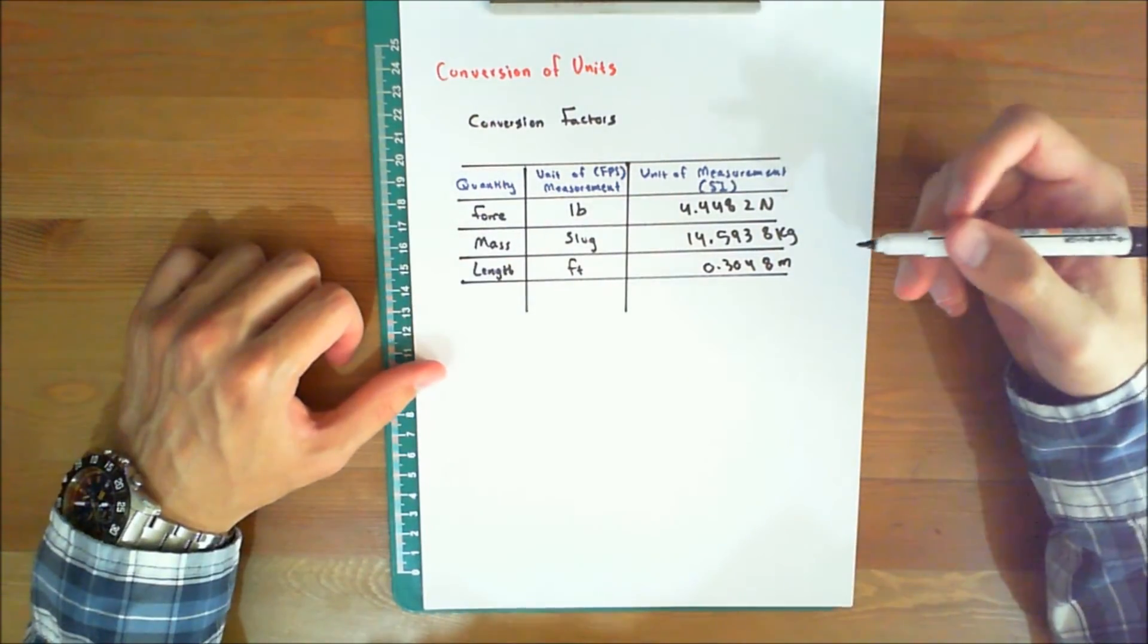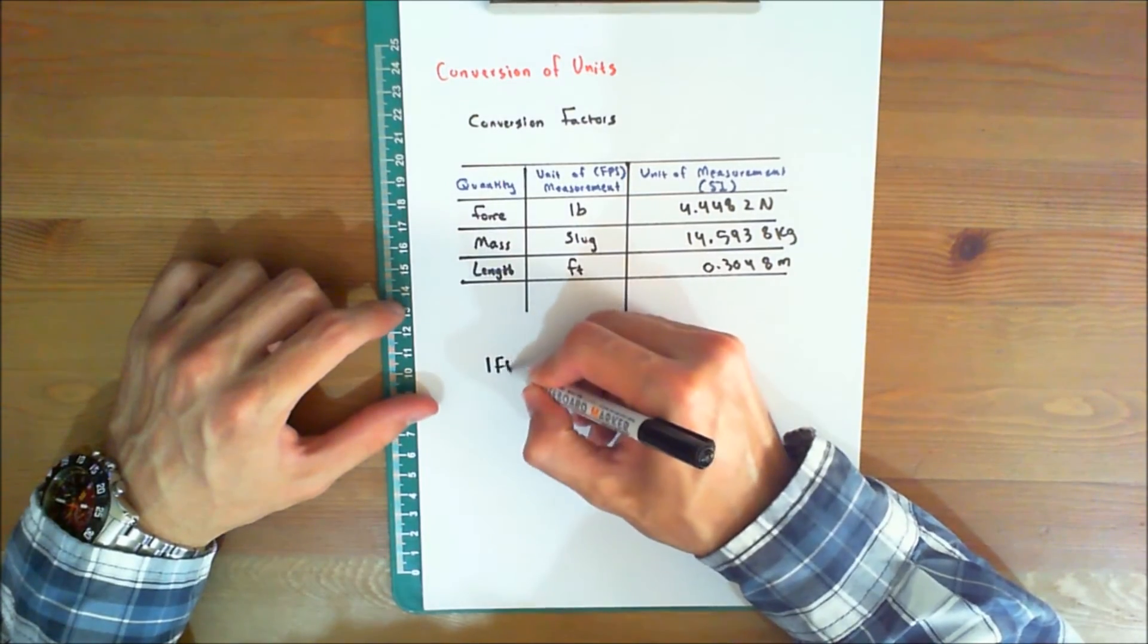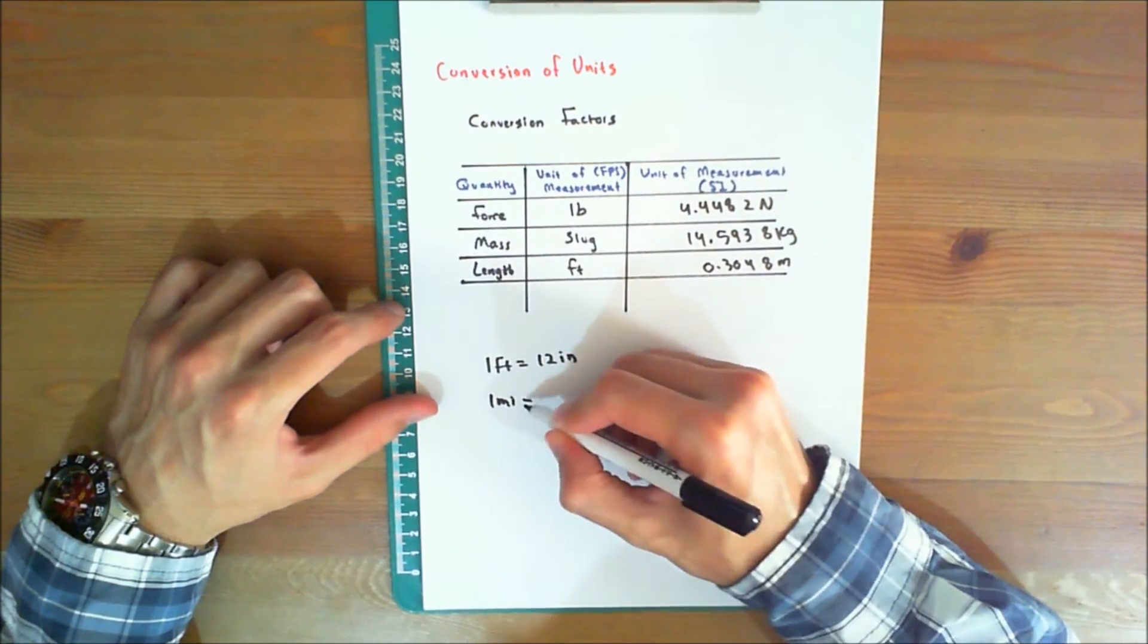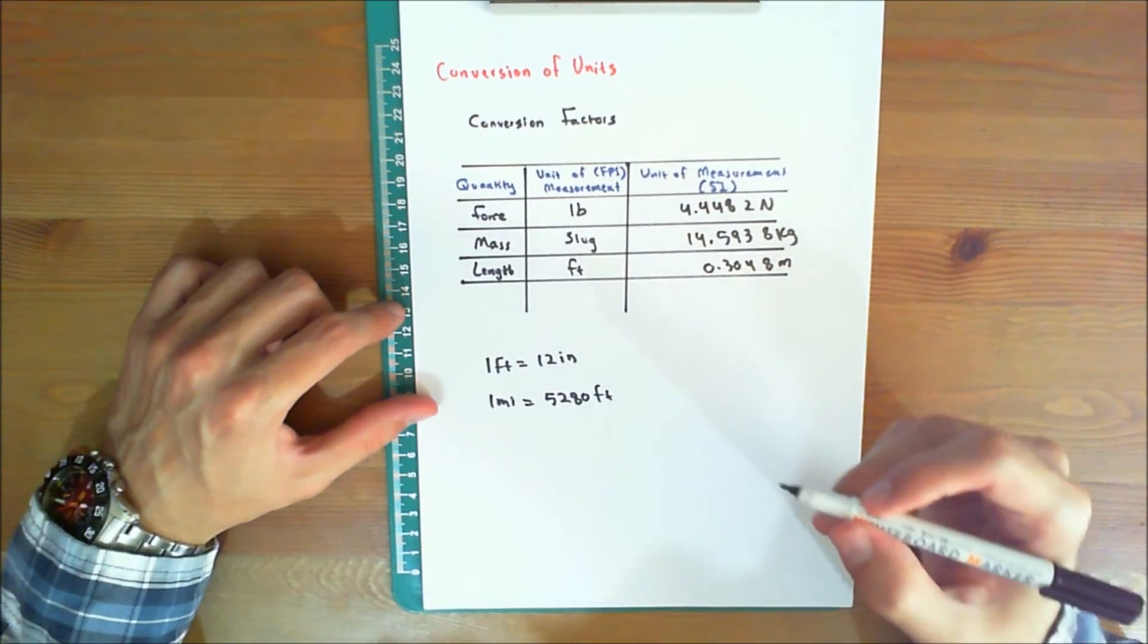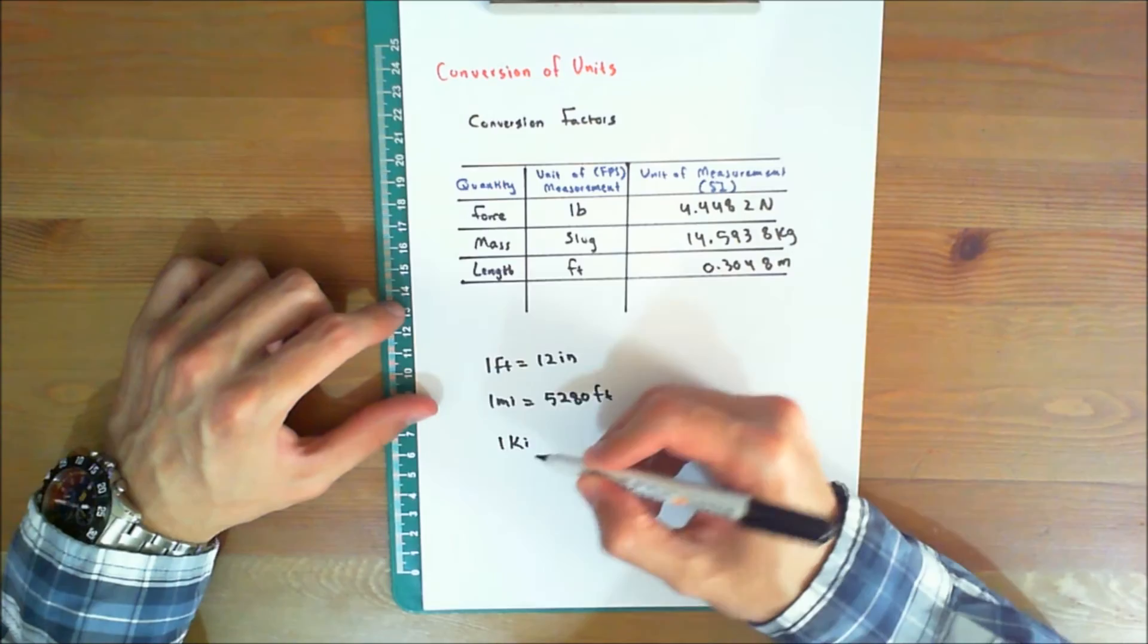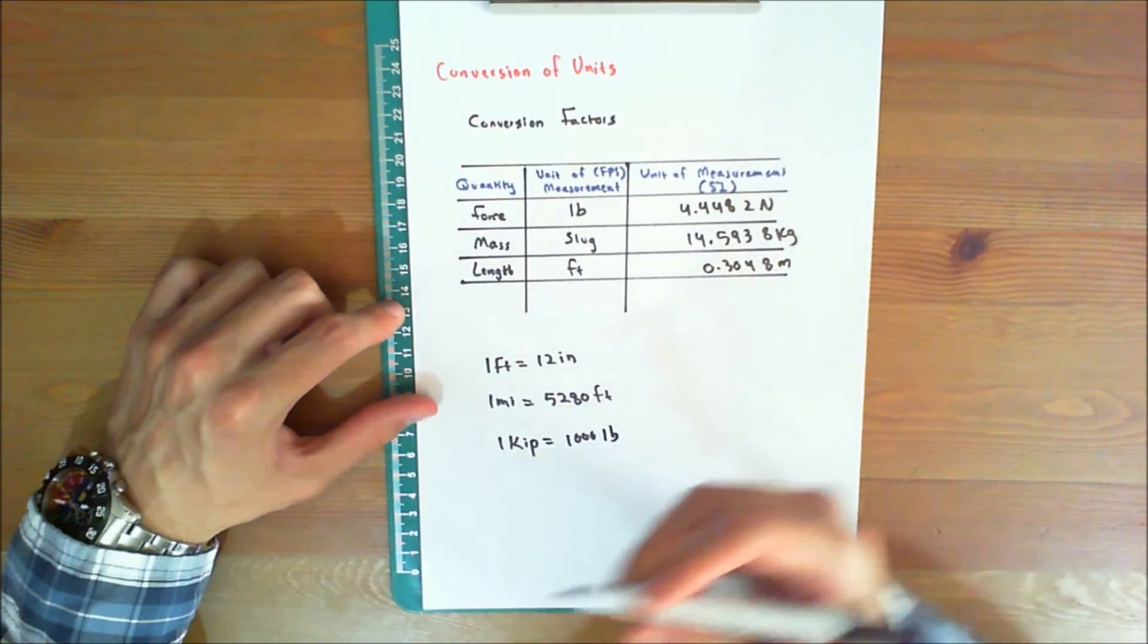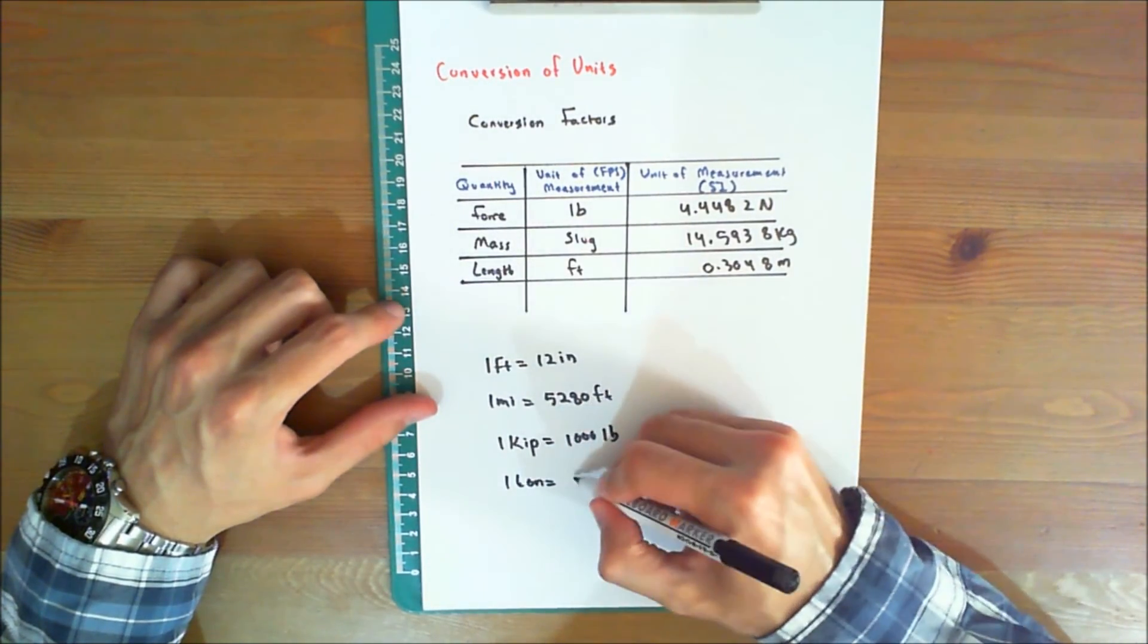Also, in the FPS system, recall that one foot equals 12 inches, one mile equals 5,280 feet, one kilopound, abbreviated kip, equals 1,000 pounds, and finally, one ton equals 2,000 pounds.